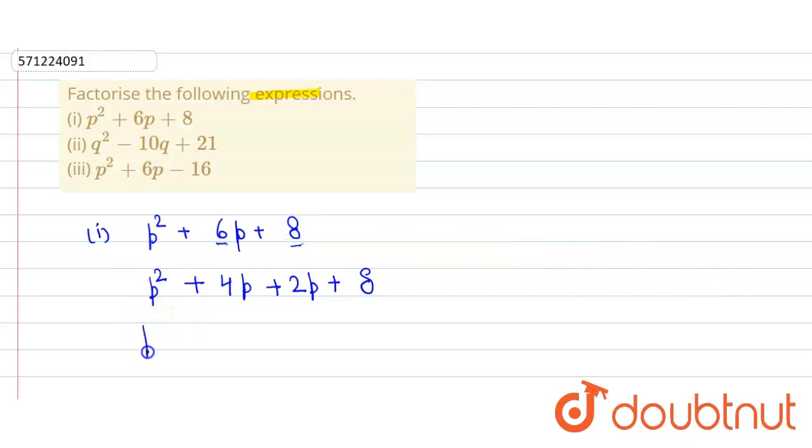Now we factorize it. In these two terms we take common p, so in bracket we get p + 4. Similarly, in the other two terms we take common 2, and in bracket we get p + 4.